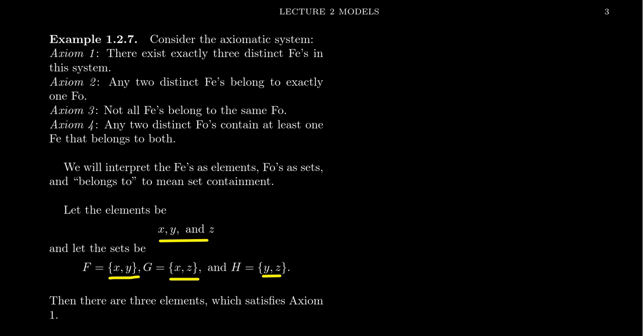So foe F is going to be X and Y, the set. The foe G is going to be X and Z. And then H is going to be Y and Z. And then belonging to it is just set containment. You'll notice that when we proved theorems about FIFO theory, we eventually proved a theorem that says it's perfectly okay to replace foes with sets of two fees. So that's sort of validating what we're saying right now.